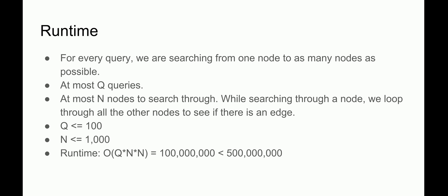Let's consider the runtime of this algorithm. For every query, we search from one node to as many nodes as we can reach. There are at most Q queries, and in every query there are at most N nodes to search through. While doing our DFS we loop through all other nodes to check for edges — N nodes each, N times. So that's N times N per query, giving a runtime of O(Q * N²). Since Q is 100 and N is 1000, this gives approximately 100 million operations, which is less than 500 million, so this will work.